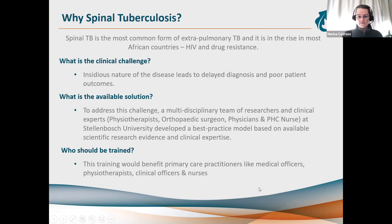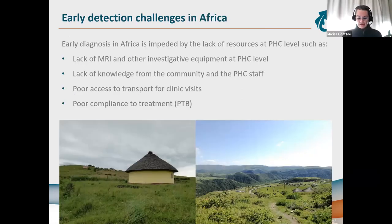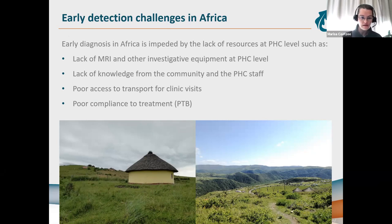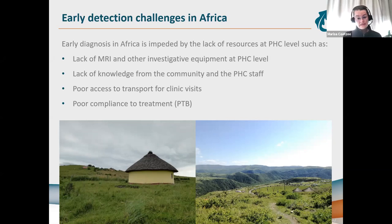We developed a decision-making pathway to help with early diagnosis of spinal TB. This training is for anyone — medical officers, physios, nurses, home-based carers, students, anyone. Early detection is very important to decrease disability. However, challenges exist: we lack MRI at primary healthcare level, there's lack of knowledge among community and primary healthcare staff, poor access to transport to clinics, and poor compliance to pulmonary treatment, which can escalate into spinal TB.